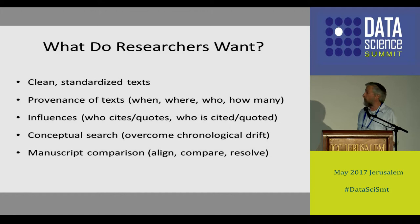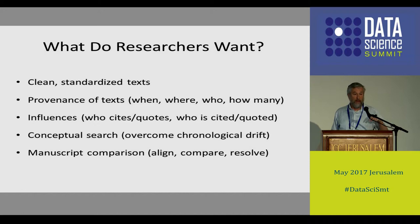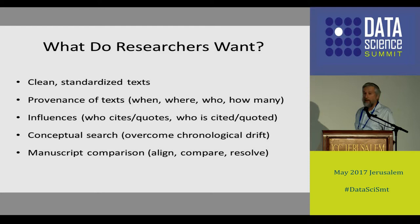You'd like to do conceptual search. Search in a historical corpus presents lots of different problems. The most interesting one is the problem of chronological drift — the same concept now will be associated with one word, but a thousand years ago there was a completely different word used for it. If I don't know the old word and only know the new word, can I still find the concept in a historical corpus? We'll show how we can use word-to-vec to do that.